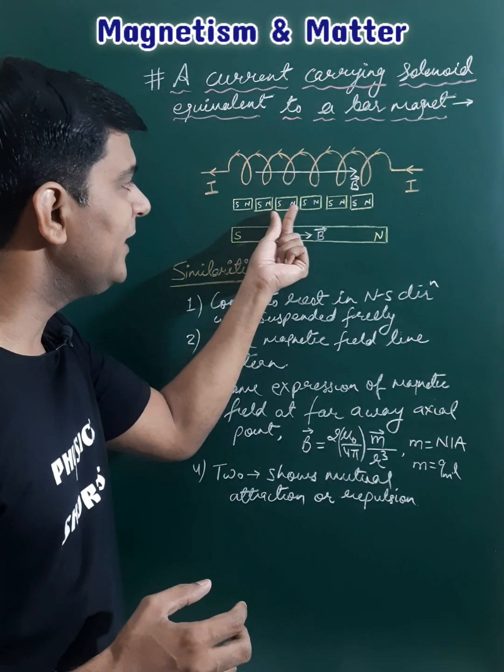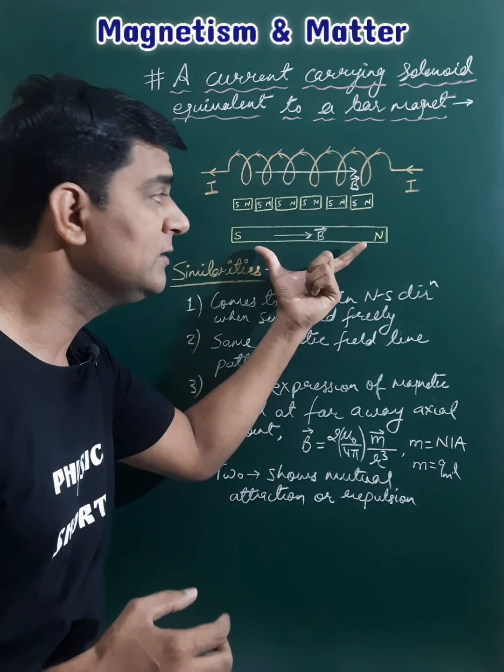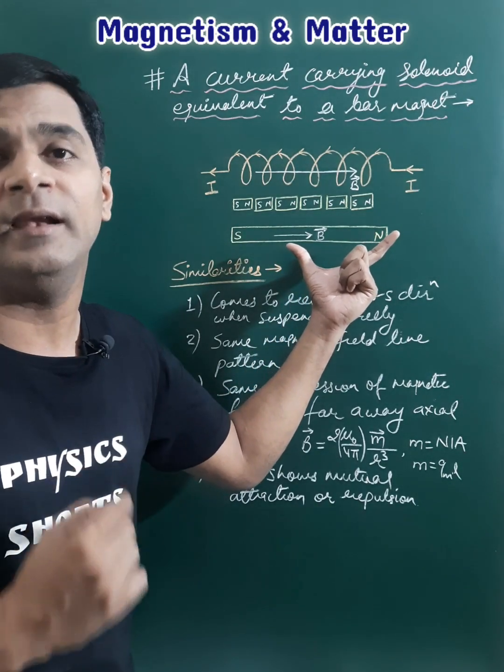Since the north-south unlike poles neutralize their effect, we can say this current carrying solenoid resembles a bar magnet of the same length.